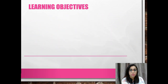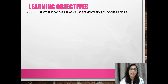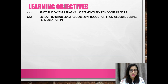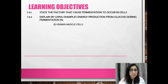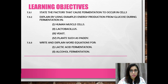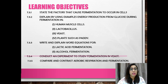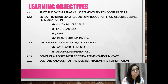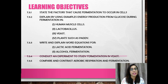Let's go through the learning objectives first. In this lesson, you should be able to state the factors that cause fermentation to occur in cells, explain energy production from glucose during fermentation in human muscle cells, Lactobacillus bacteria, yeast, and plants such as paddy. You must also write and explain word equations for lactic acid fermentation and alcohol fermentation, and compare and contrast aerobic respiration with fermentation.